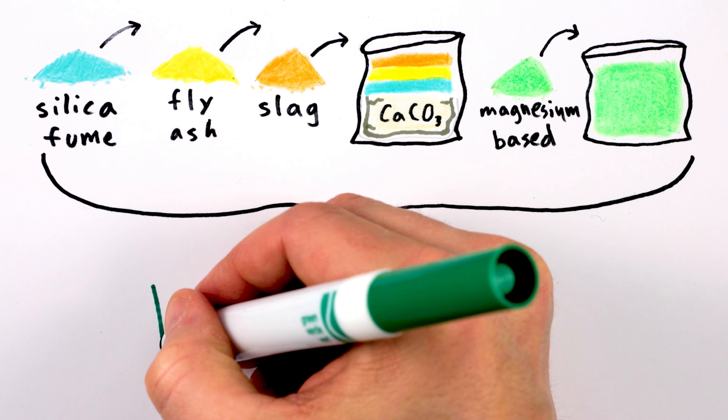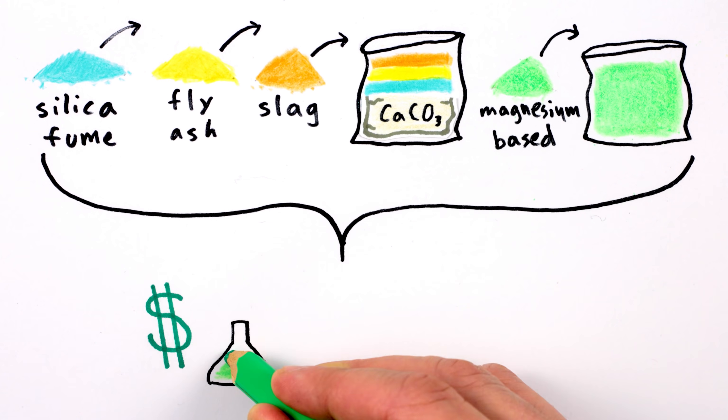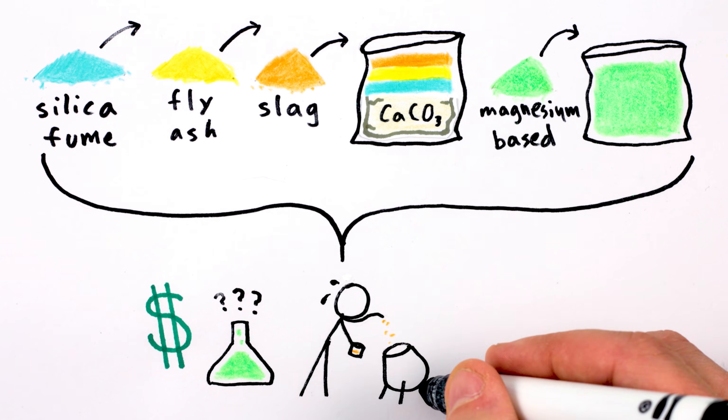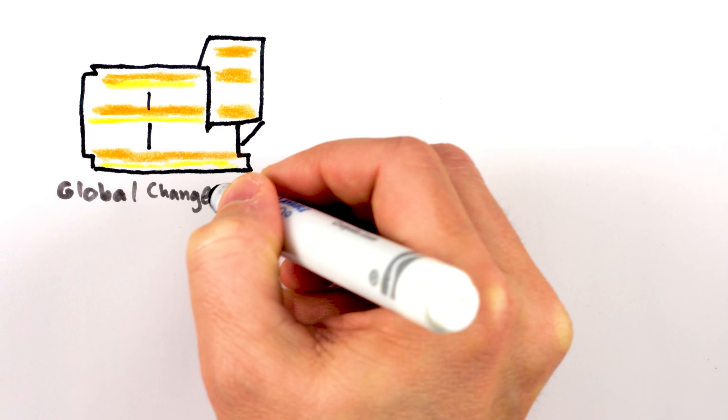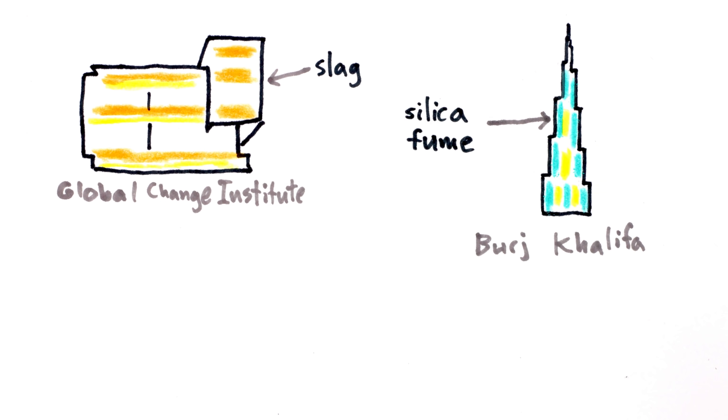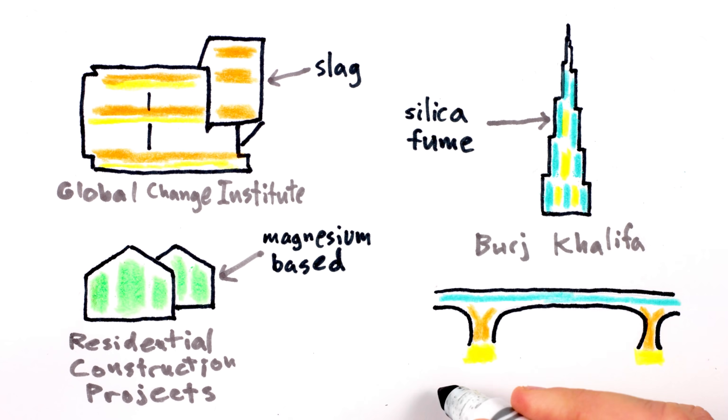So far, most of these alternatives are either too expensive to make, or too early in development, or are being adopted tentatively because concrete is such an important structural material. But some alternative cements are already being used successfully in major buildings and bridges around the world.